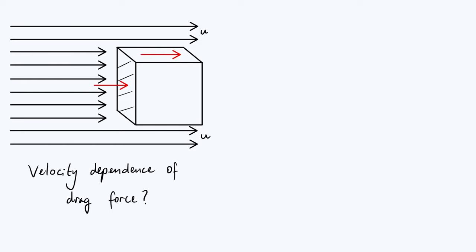Now ultimately, there are two effects contributing to the drag force on our cube, represented by the two red arrows I've just drawn onto my diagram. The first, which I'm going to label as Fi, meaning inertial force, arises from the bombardment of the front face of the cube by fluid particles. Those fluid particles are coming in and having their velocity reduced from u down to zero by the surface of the cube. Therefore the cube exerts a leftwards force on those fluid particles, and by Newton's third law, the fluid particles exert a rightwards force on the surface of the cube.